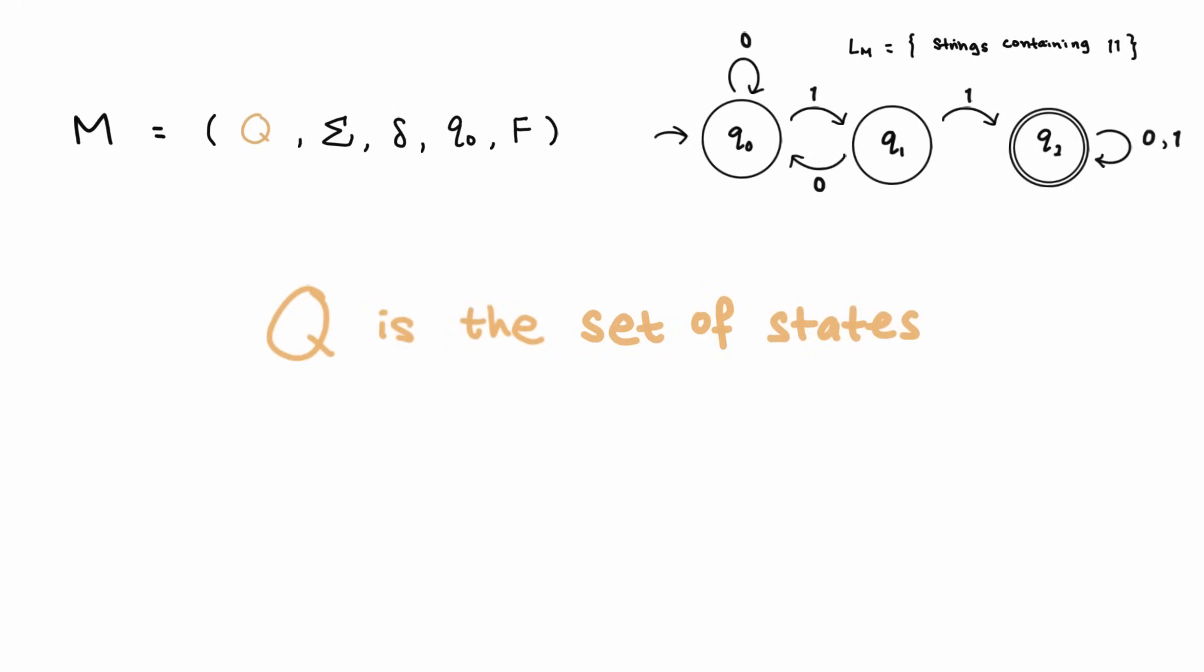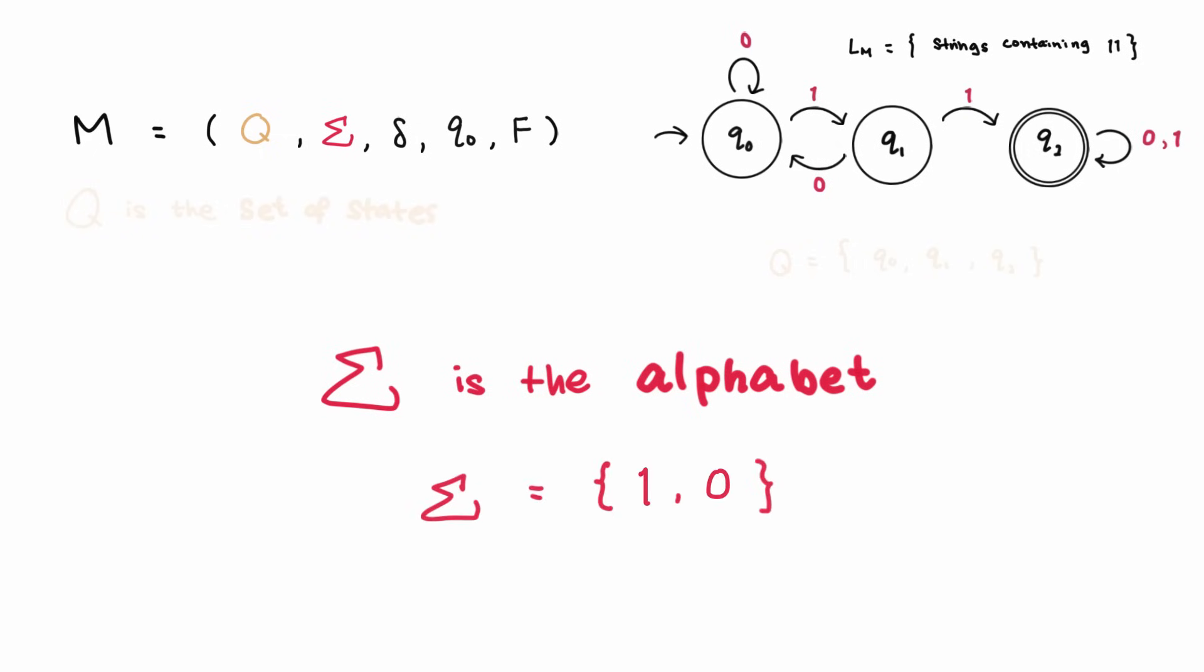Q is a finite set of the machine states. And for our machine M, that would be the set containing Q0, Q1, and Q2. Sigma is a finite set called the alphabet, which are the kinds of symbols that are recognized by the machine. So in this case, it is the set containing 1 and 0.